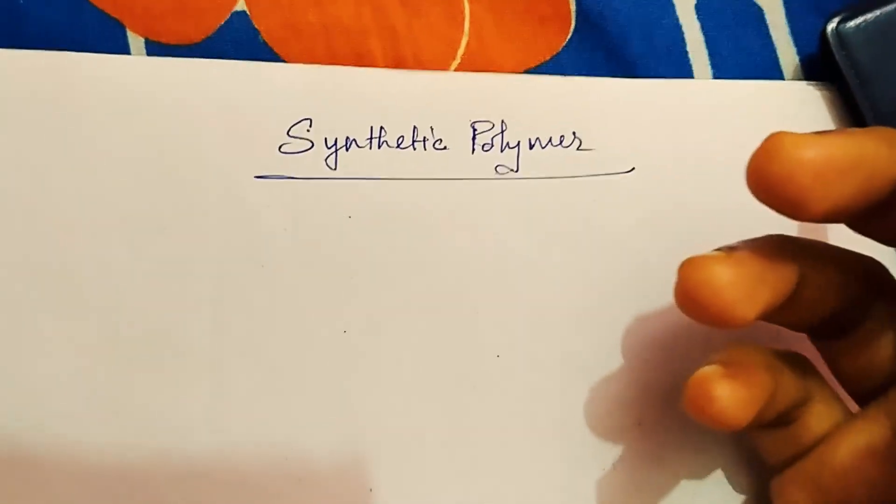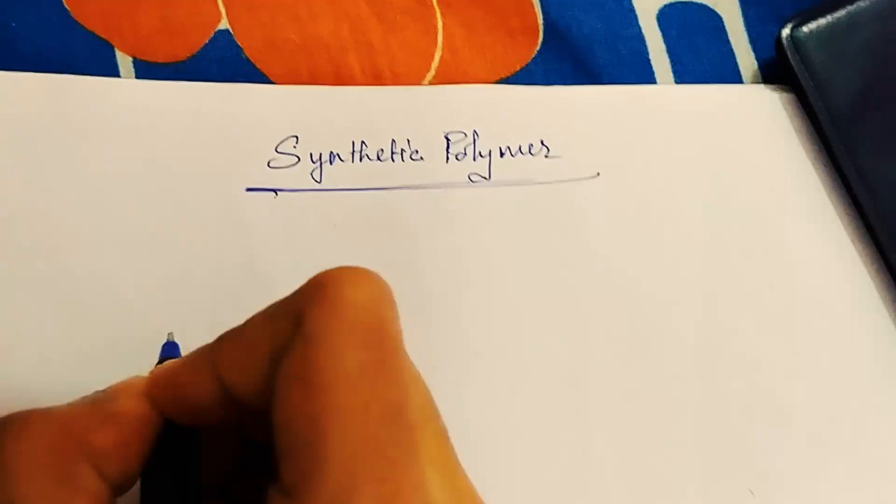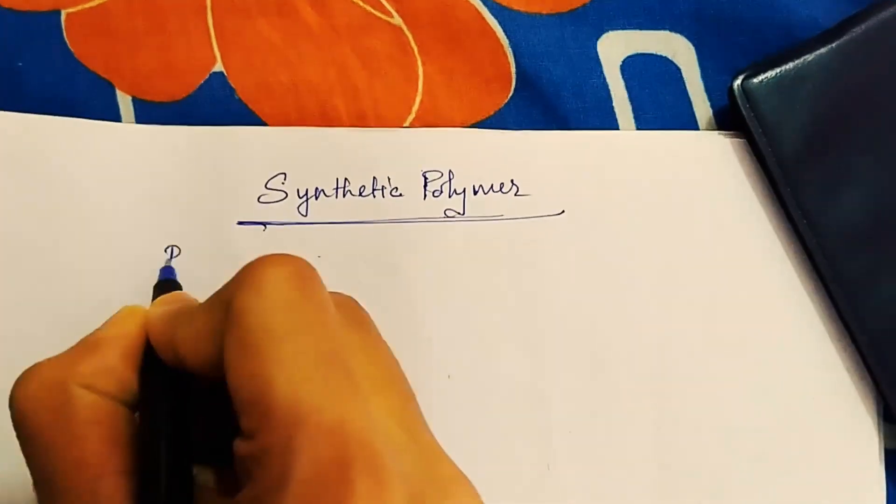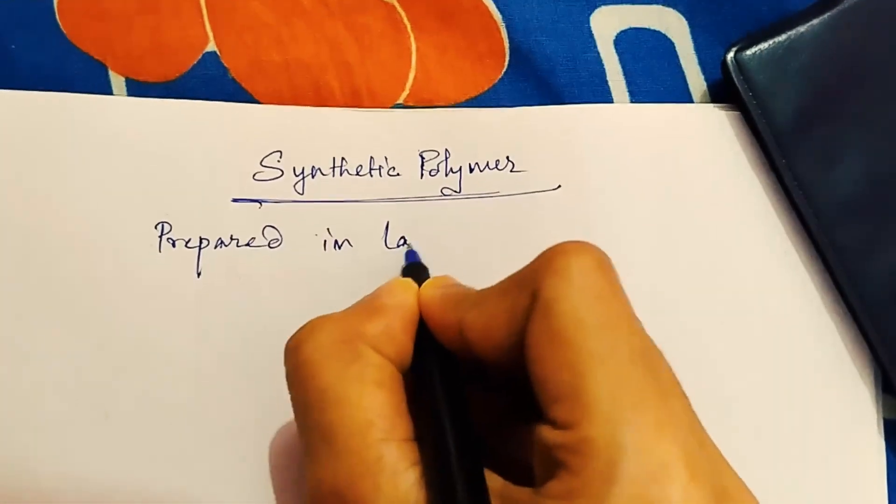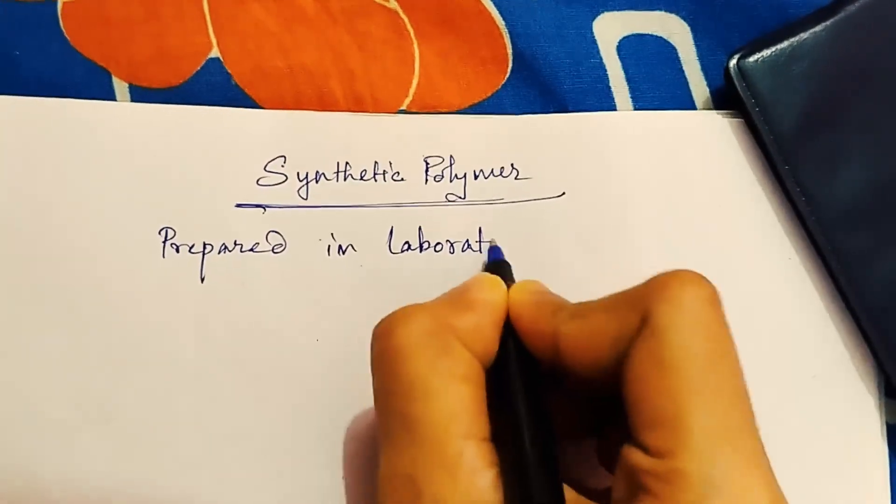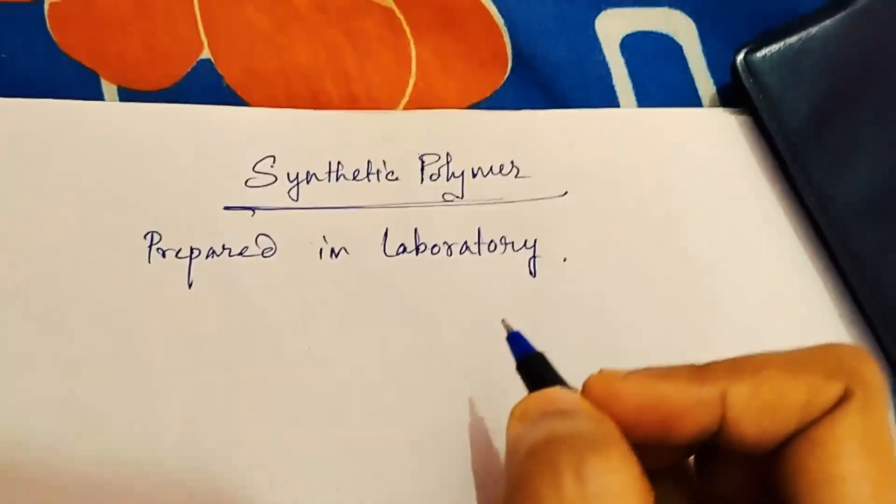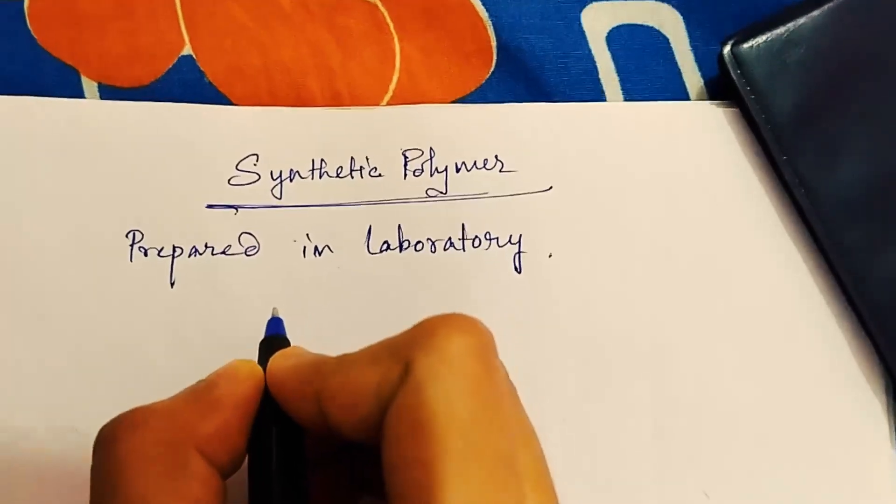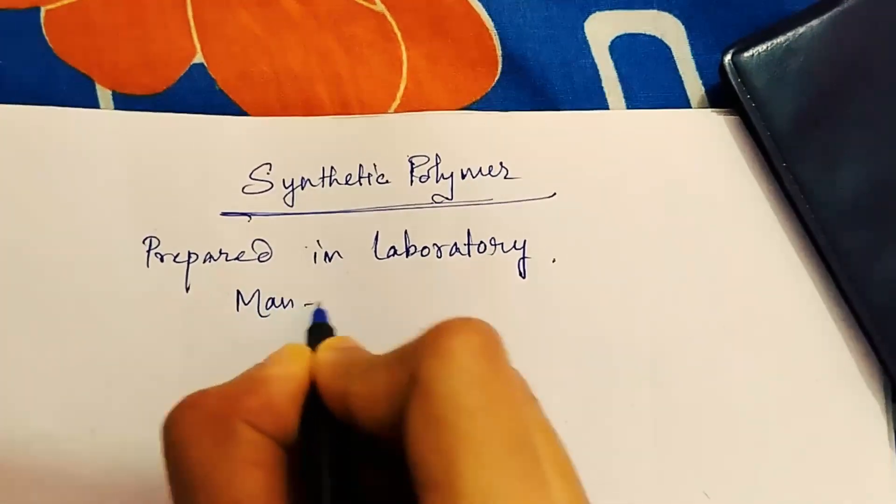So let's start it. The synthetic polymers are those polymers which are fully prepared in laboratory. That means it is actually prepared by human beings in the laboratory, so we can also say the synthetic polymer is actually man-made polymer.